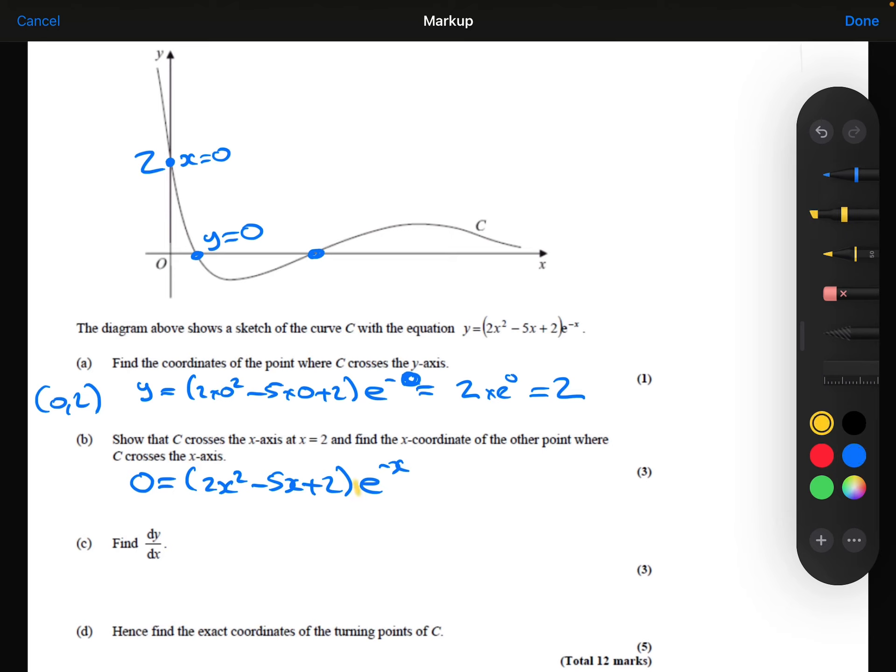Now I know that the exponential can never equal 0, so I can divide both sides by that and just consider the quadratic. When does 2x squared minus 5x plus 2 equals 0? We can solve by factorizing. That's going to have to be a minus 2 and a minus 1. So we find that x is either equal to 1/2 or x is equal to 2. 2 was what we needed to show and 1/2 must be the other point.